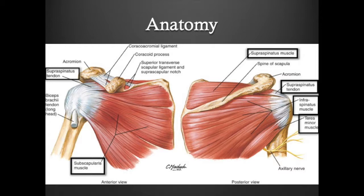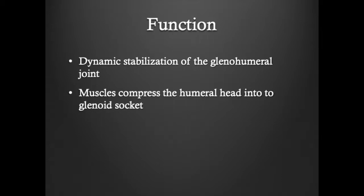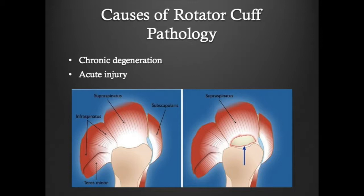The rotator cuff functions in dynamic stabilization of the glenohumeral joint. The muscles compress the humeral head into the glenoid socket. There are typically two causes of rotator cuff pathology: chronic degeneration and acute tears.